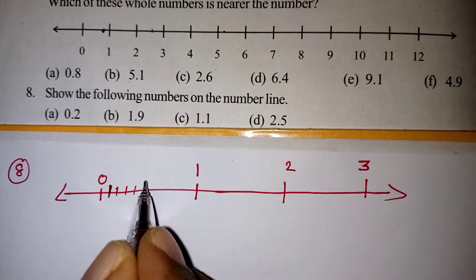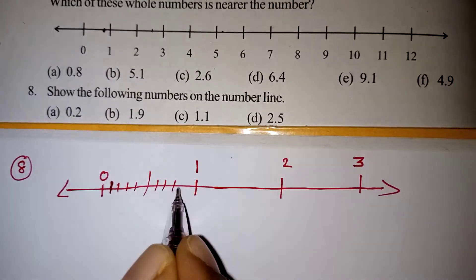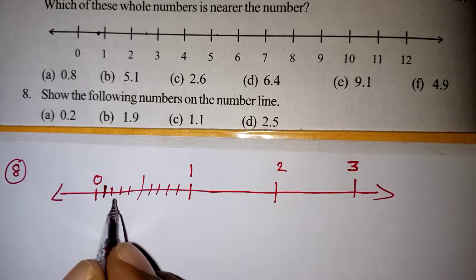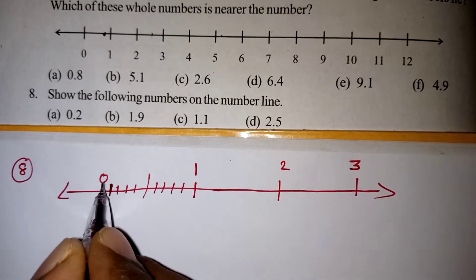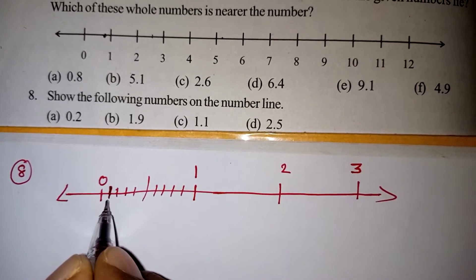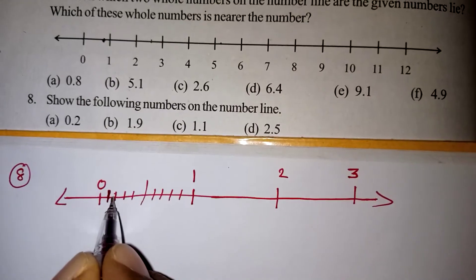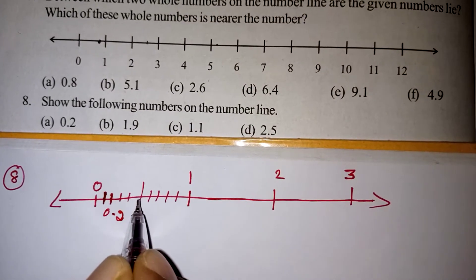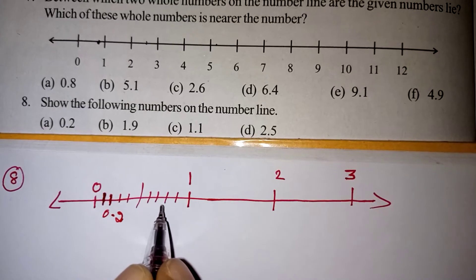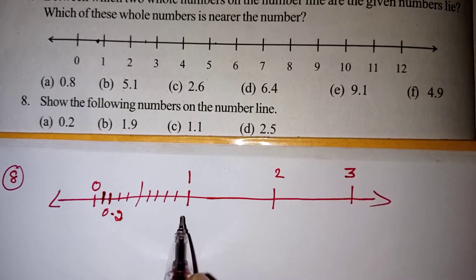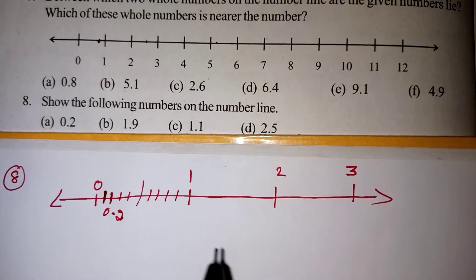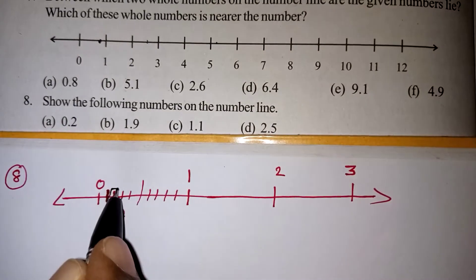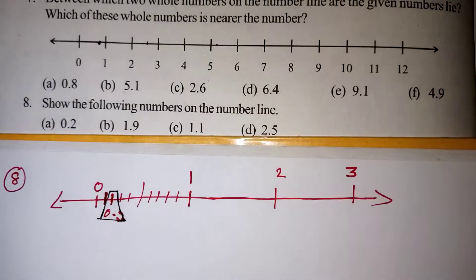By looking at the small scale, you can understand 10 small lines will be there. Like that, here also 10 small lines: 1, 2, 3, 4, 5, 6, 7, 8, 9 and 10. Here, the first number, this is 0 means this number will be 0.1, then 0.2. So this is your 0.2, then 0.3, 0.4, 0.5, then 0.6, and it will reach 1. This is your 0.2, the second line. From 0, the second line is 0.2.